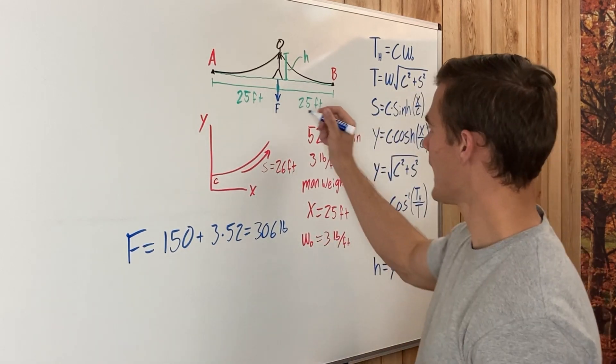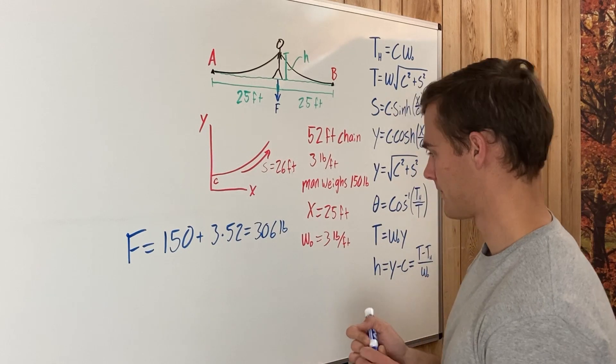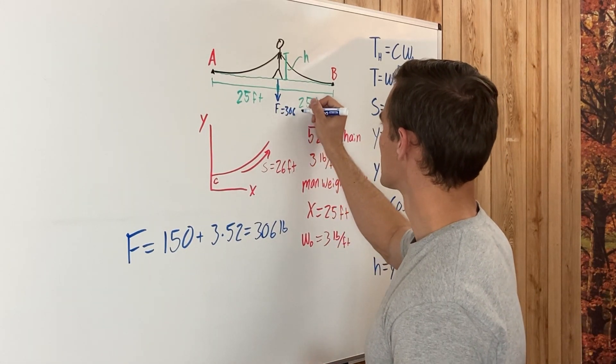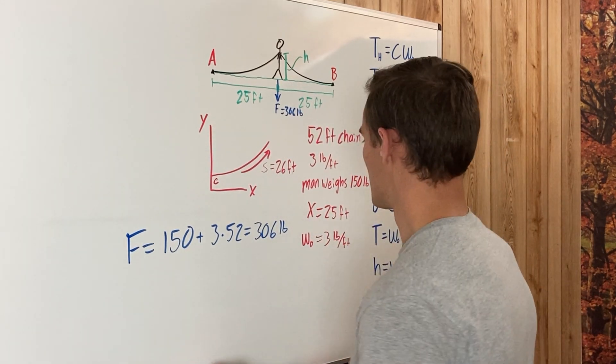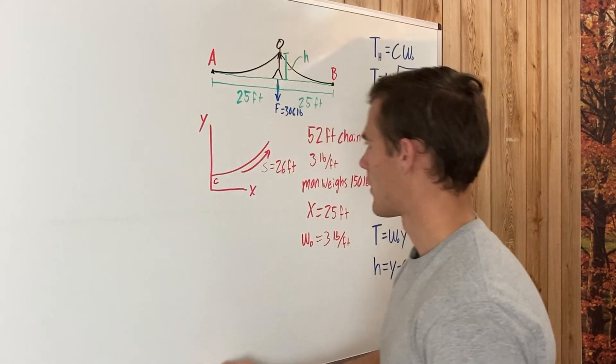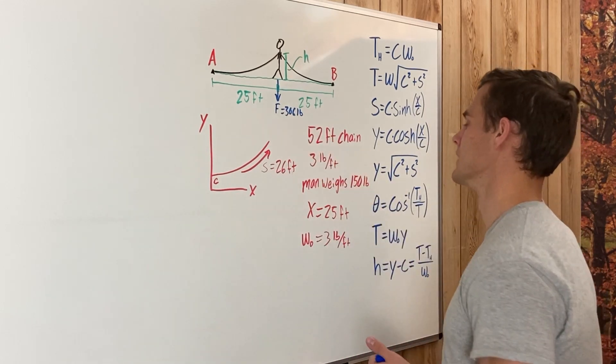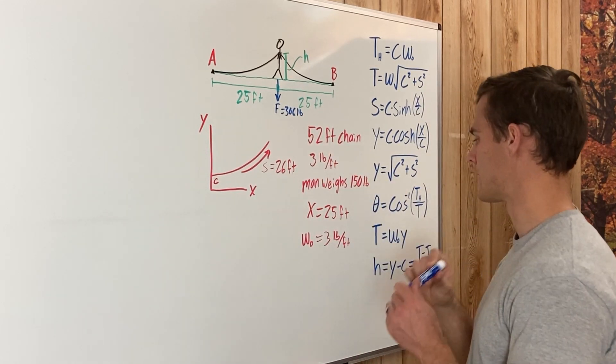So F is 306 pounds. Now we need to solve for how high he needs to lift it up to get it all off the ground. For this to be true, that the force to be 306 pounds, that means we need to find H, and so first we need to find C.